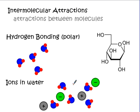Intermolecular attractions are what hold molecules together. Water spilled on a table doesn't go everywhere — it tends to stay together in one spot. Solids like sugar tend to stick together in one clump instead of spreading out. This is due to intermolecular attractions. Intermolecular attractions are also responsible for dissolving things. The two types we're going to focus on are polar intermolecular attractions — including hydrogen bonding and ions dissolved in water — and nonpolar bonding.